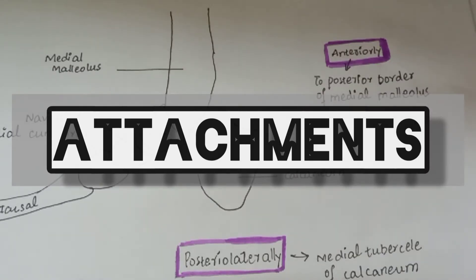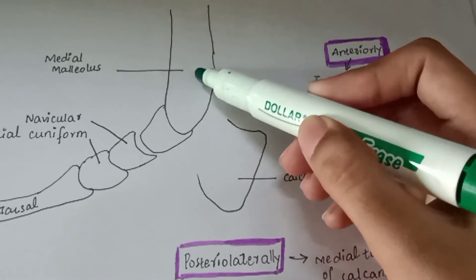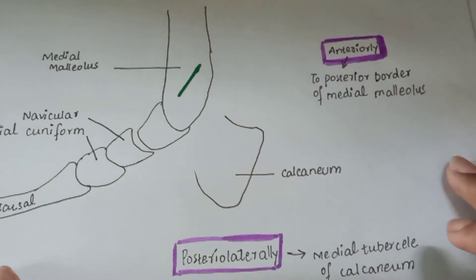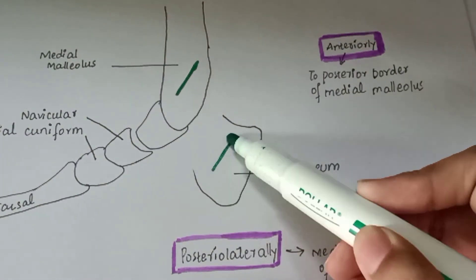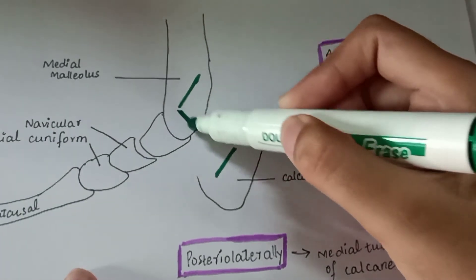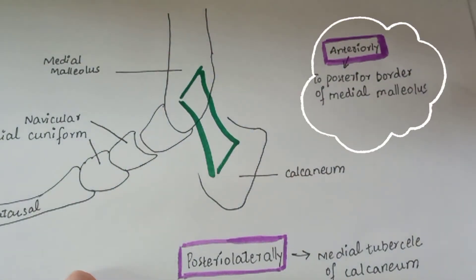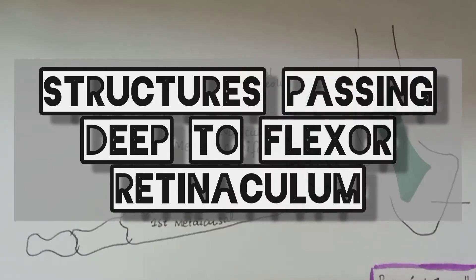Now we will see the attachments of the flexor retinaculum. Anteriorly, it is attached to the posterior border of the medial malleolus right here, and posteriorly it is attached to the medial tubercle of the calcaneum. These are the attachments.